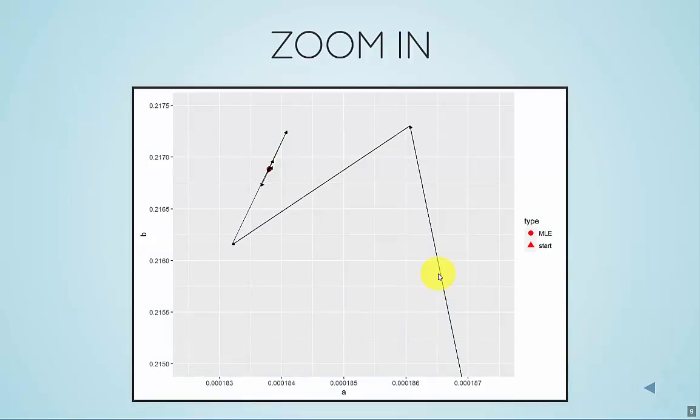If we zoom in to those few points, we can see a little bit better what's going on. So here's the step from the second point to the third iteration to the fourth iteration.